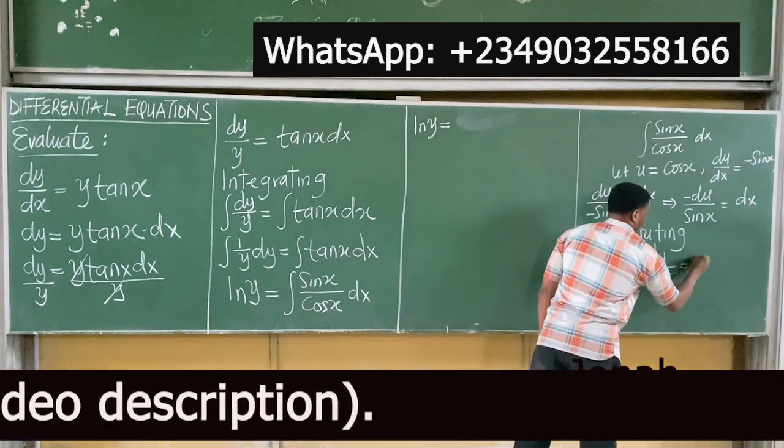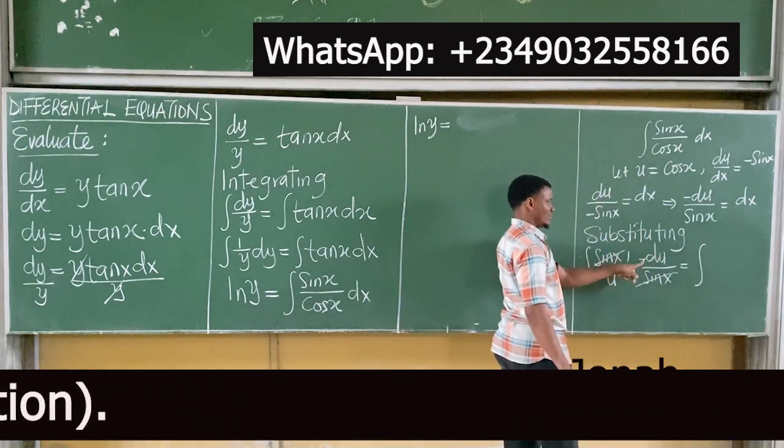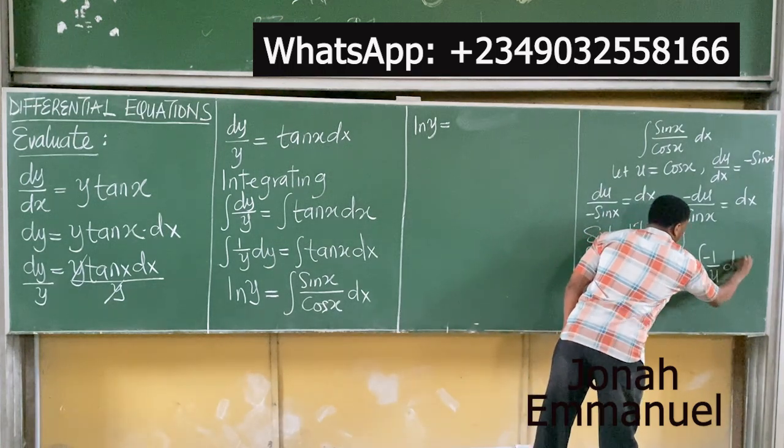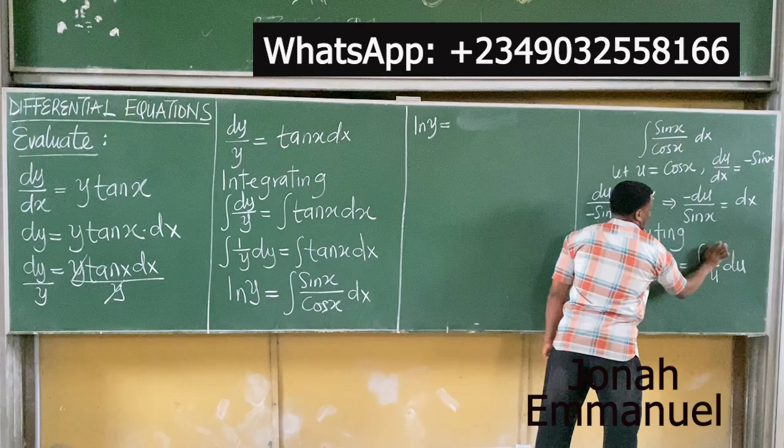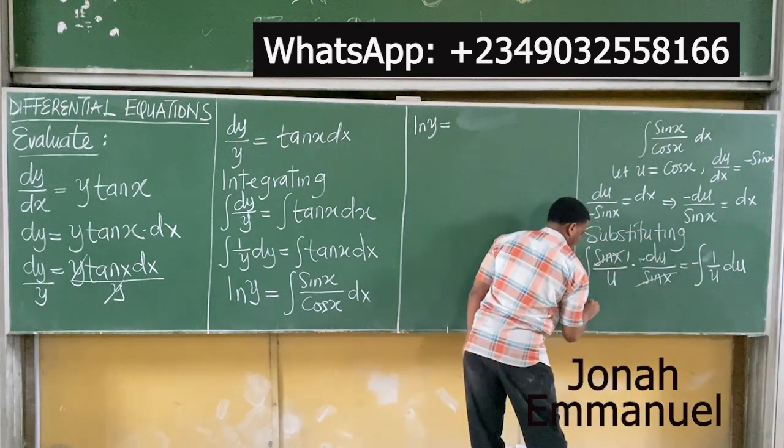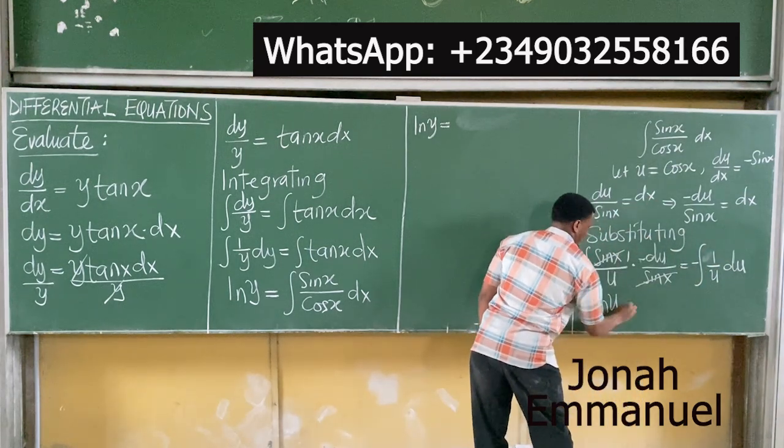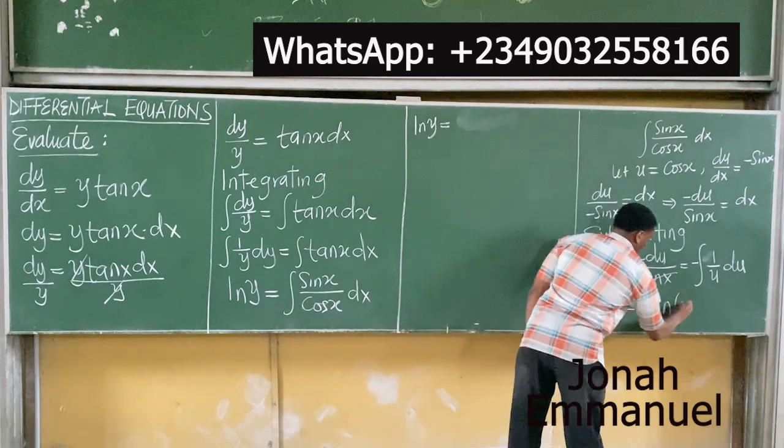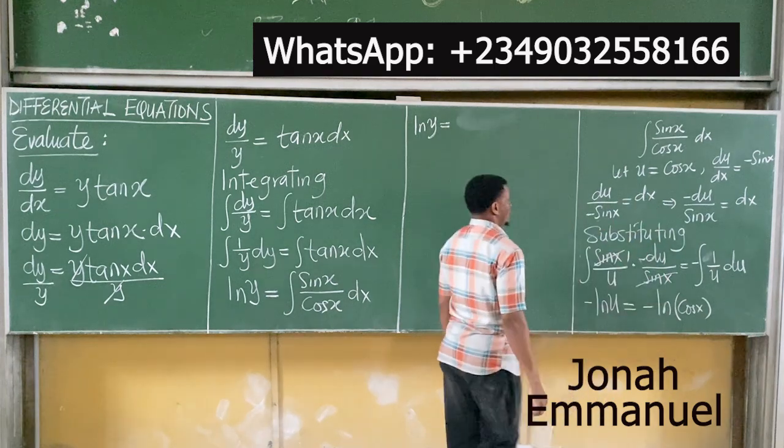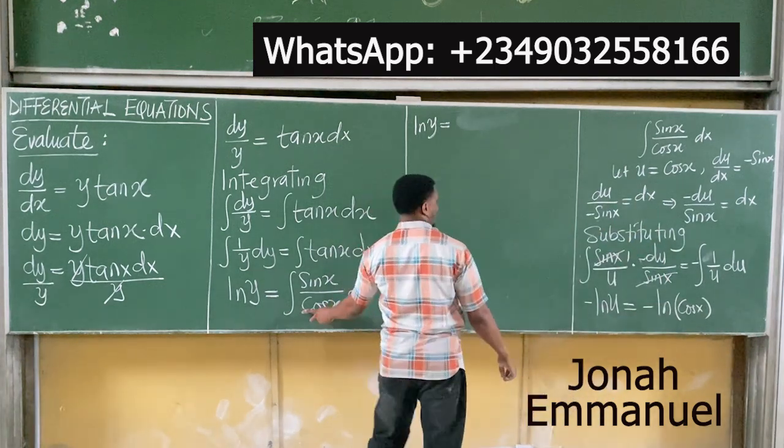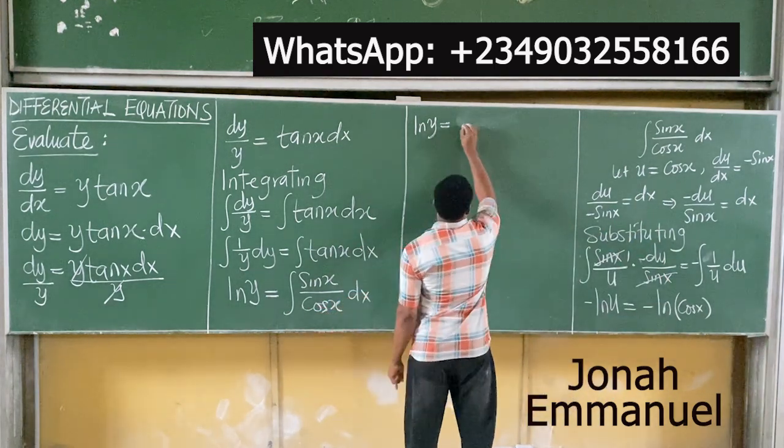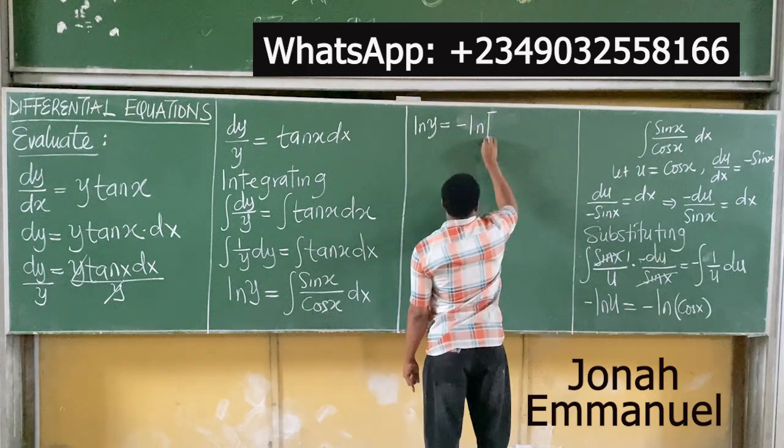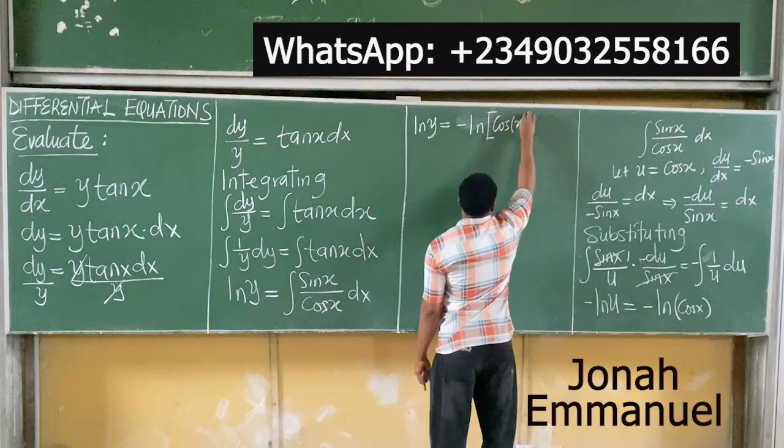This is equal to the integral of -1/u*du. The minus goes outside the integral sign. It becomes this, which equals -ln(u). That's equal to -ln(cos(x)). So from here, if I integrate this one as you've seen here, you have -ln(cos(x)).